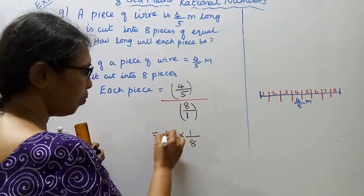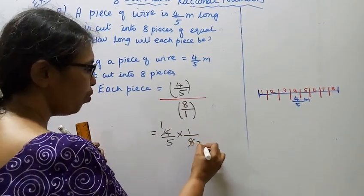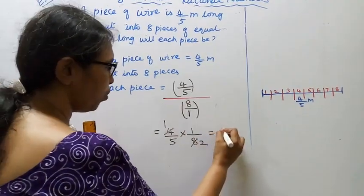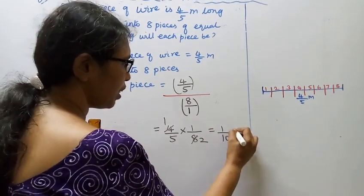Cancel: 4 and 8 becomes 1 and 2. So we get 1 by 10 meter. This is correct.